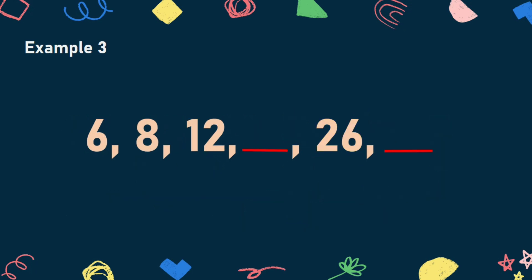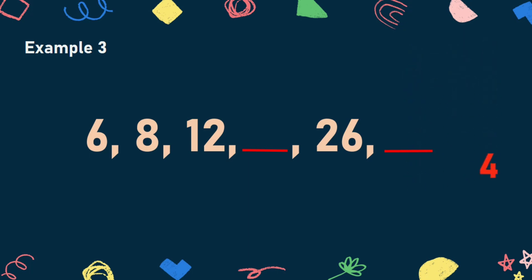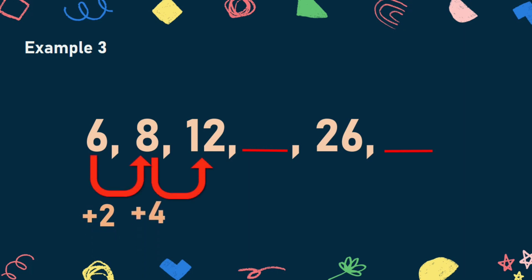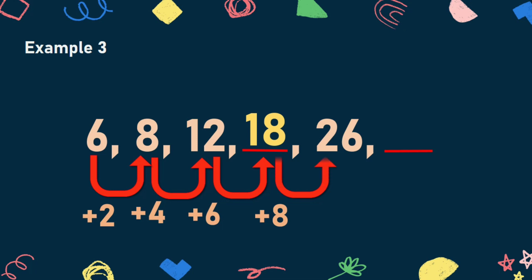Let us take a look at this example. Look closely at the difference of 6 and 8, and 8 and 12. 8 minus 6 is equal to 2, and 12 minus 8 is equal to 4. The difference is a multiple of 2. Therefore, we need to add the multiples of 2 to each of the terms. Adding 6 to 12 becomes 18. Adding 8 to 18 becomes 26. And adding 10 to 26 becomes 36. Hence, 18 and 36 are the missing terms.